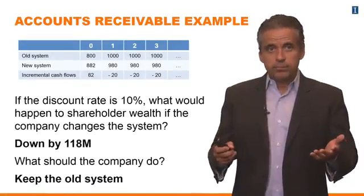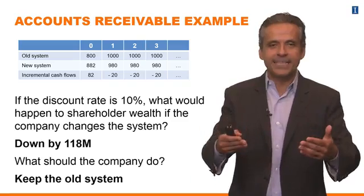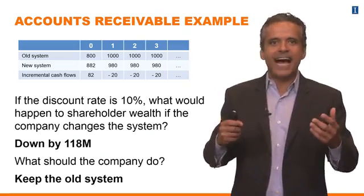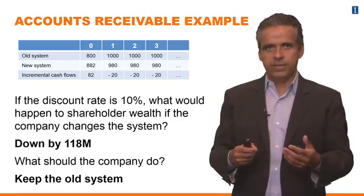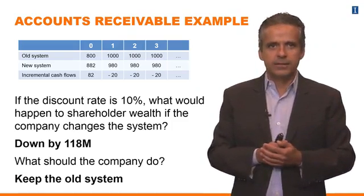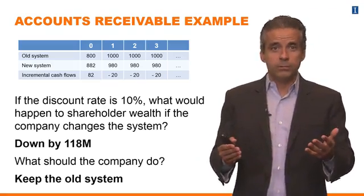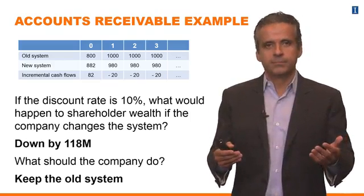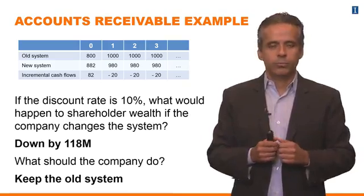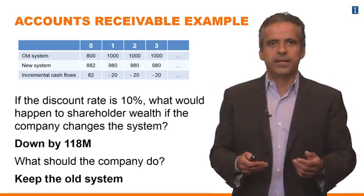The answer is very simple. Since NPV and shareholder wealth are the same concept — mathematically equivalent — shareholder wealth is going to go down by exactly $118 million. If the company makes that decision, they are going to destroy shareholder value; shareholders are going to lose $118 million. So what should the company do? Obviously, keep the old system. Zero is better than minus 118, so just do what you're doing right now — no change.